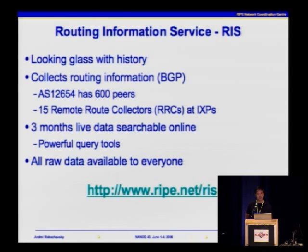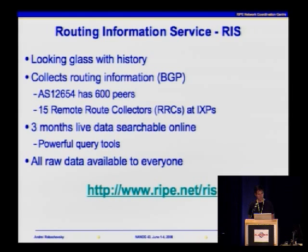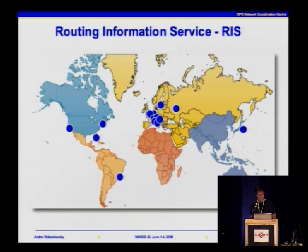The next platform is the Routing Information Service, or RIS. As I said, one can look at this as a looking glass with history. We collect BGP updates from about 600 peers from 15 locations around the globe and keep them in our database, which is searchable over three months. We also keep raw data forever. This is a geomap showing the locations of RIS route collectors — they are mostly connected to big internet exchanges where we can get many peerings.